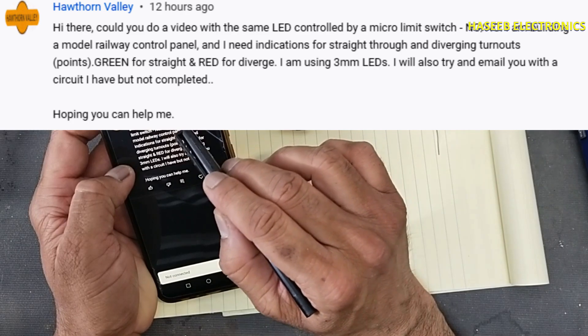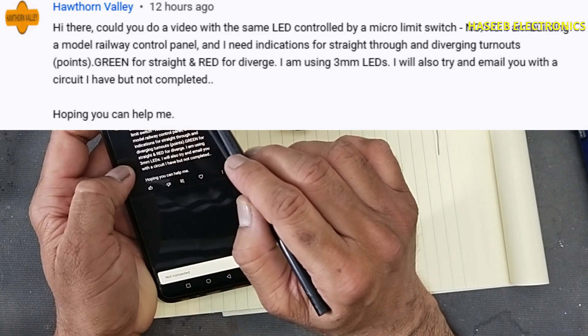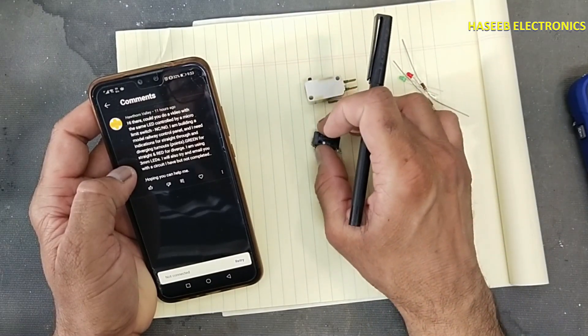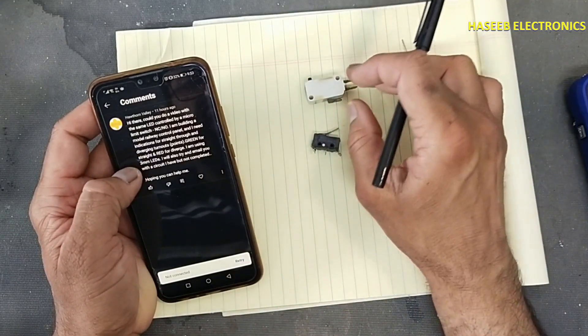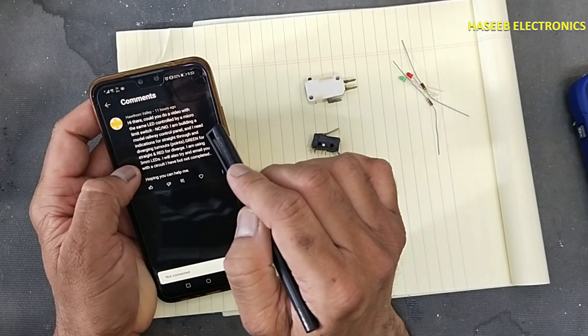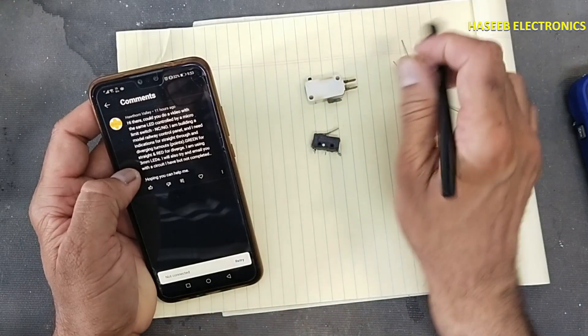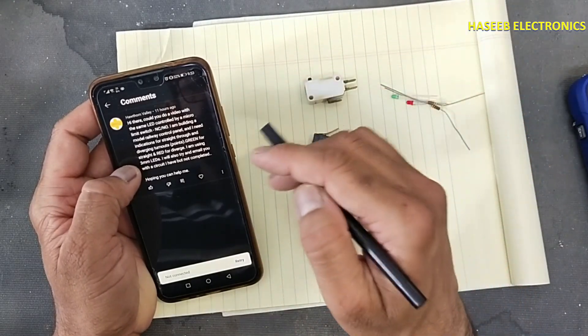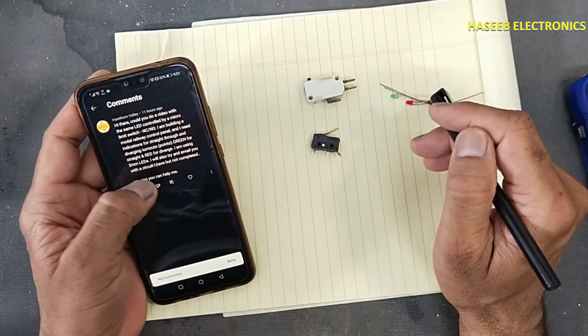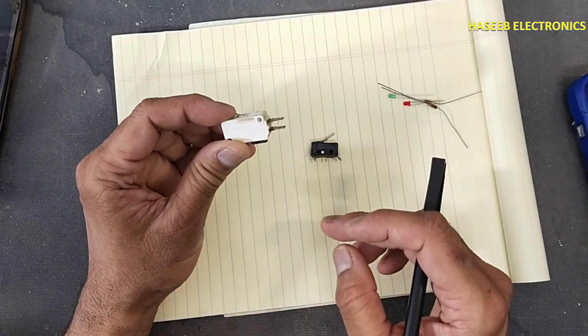Could you do a video with LED controlled by micro limit switch, normally closed and normally open? I am building a project for railway model control panel and I need indicators for straight throw and diverging turnouts - green for straight and red for diverging. I am using 3mm LEDs.